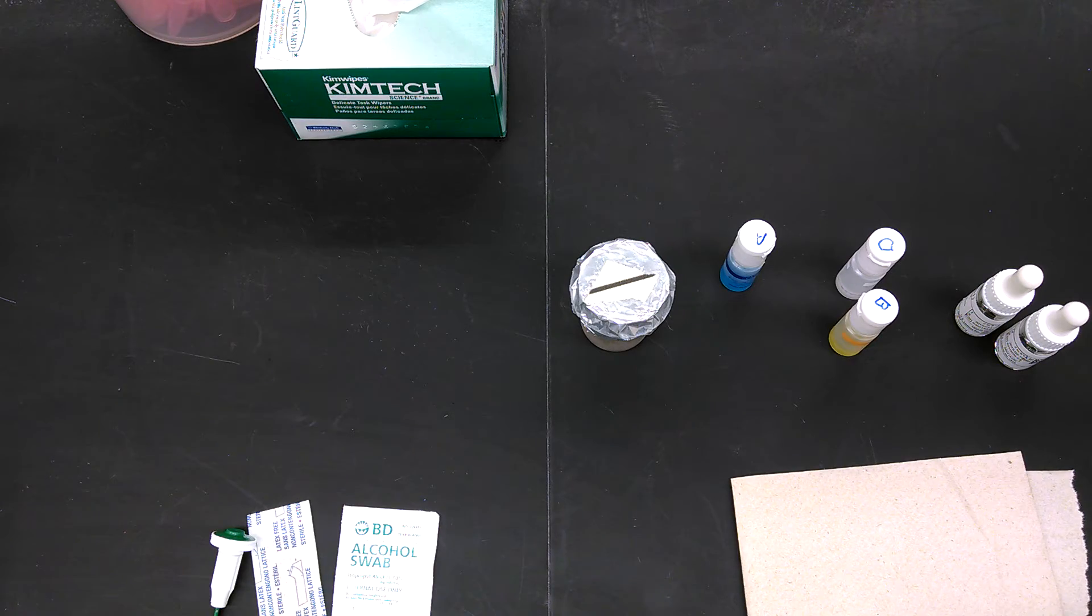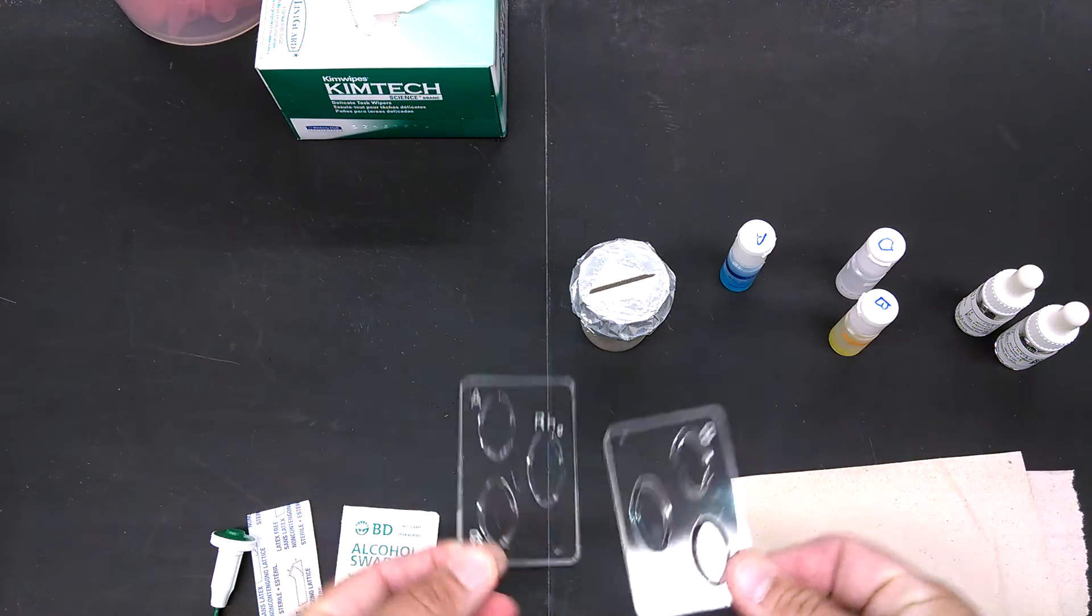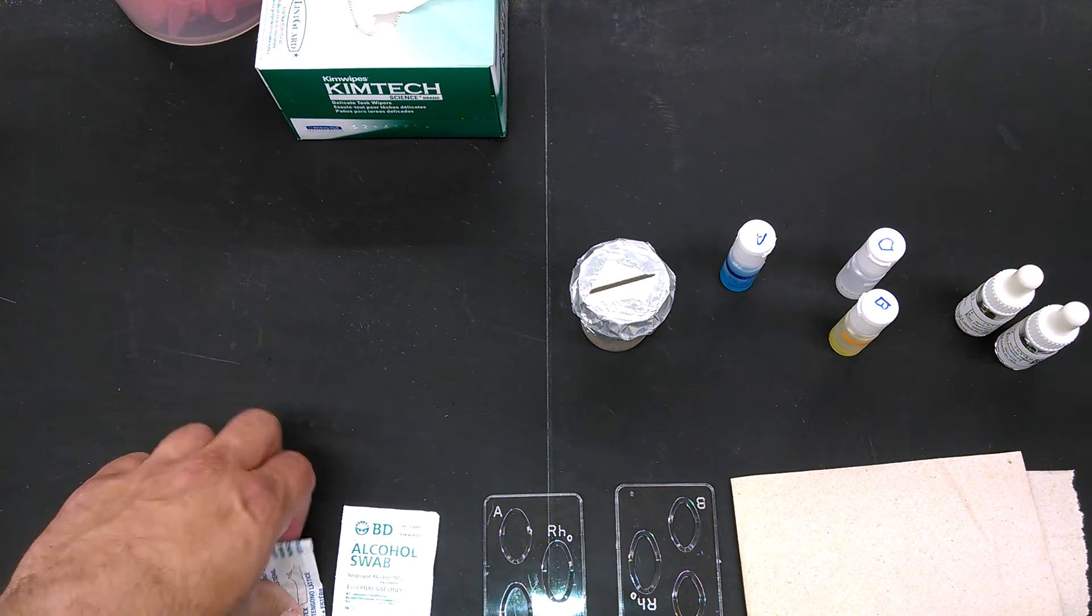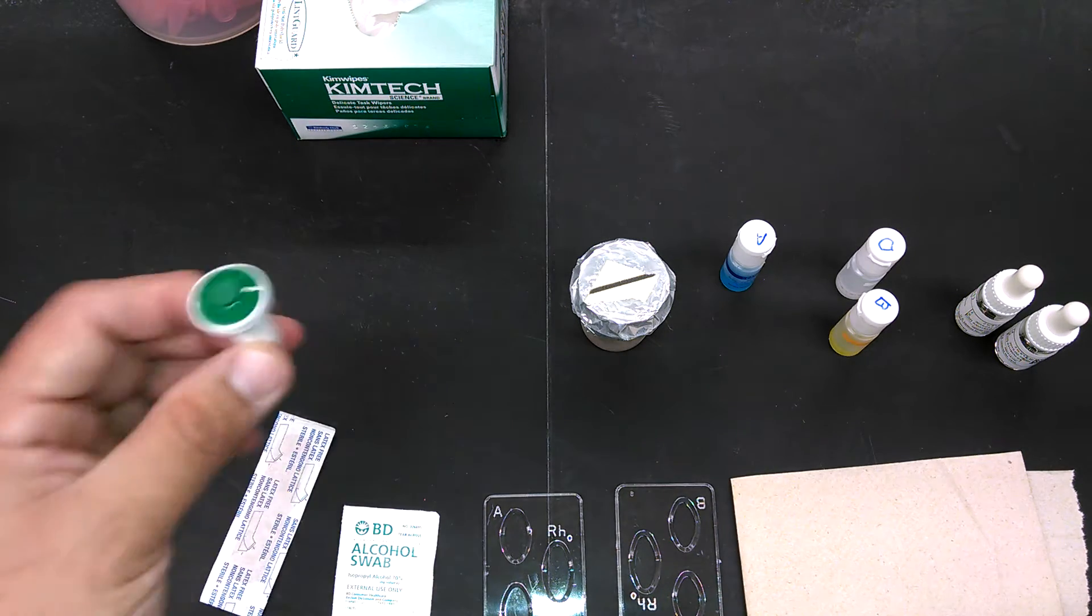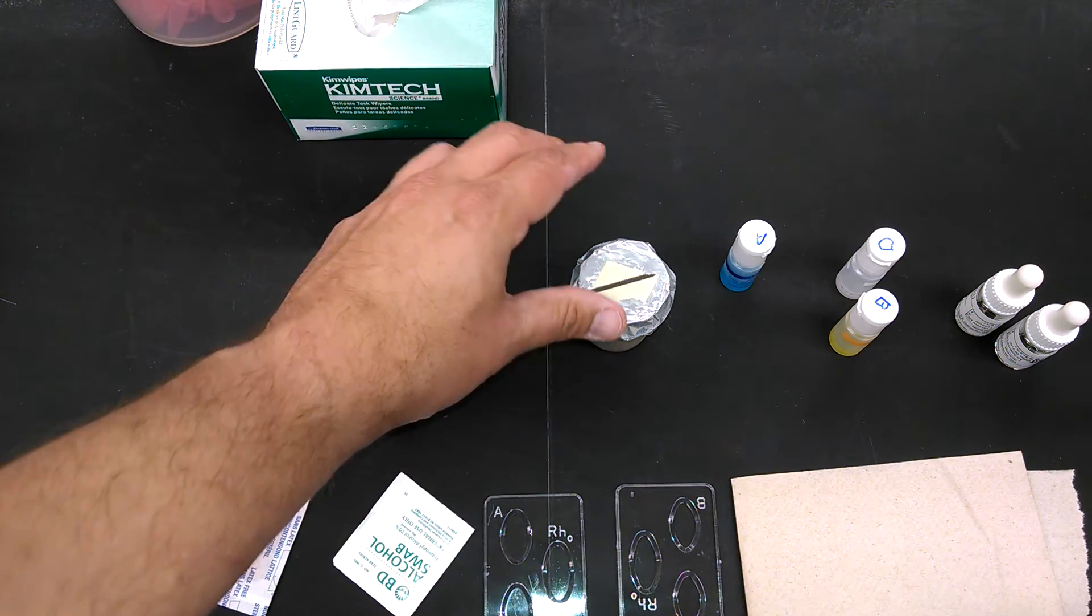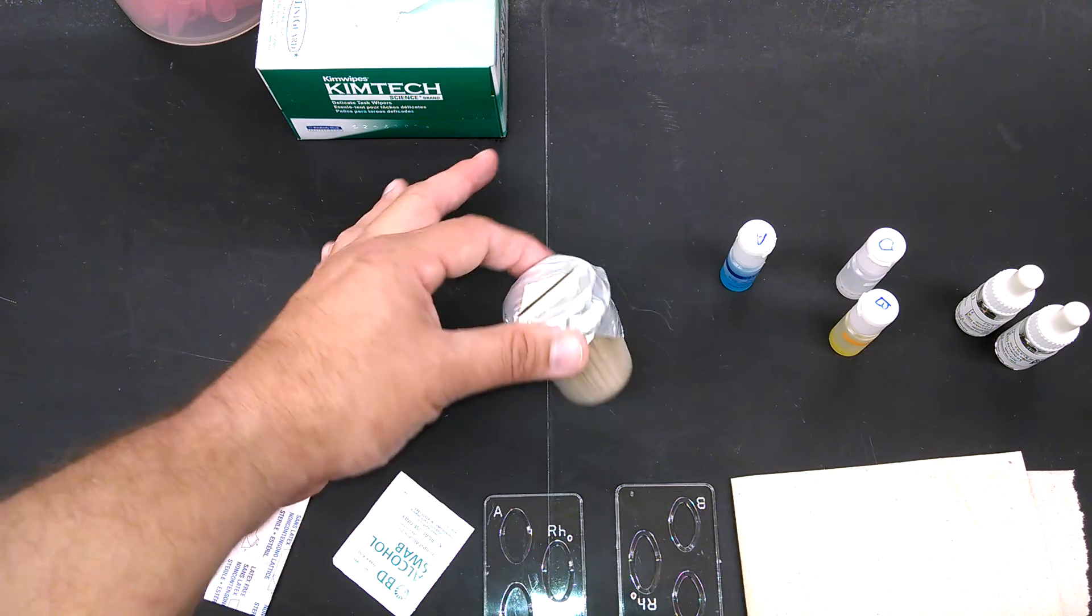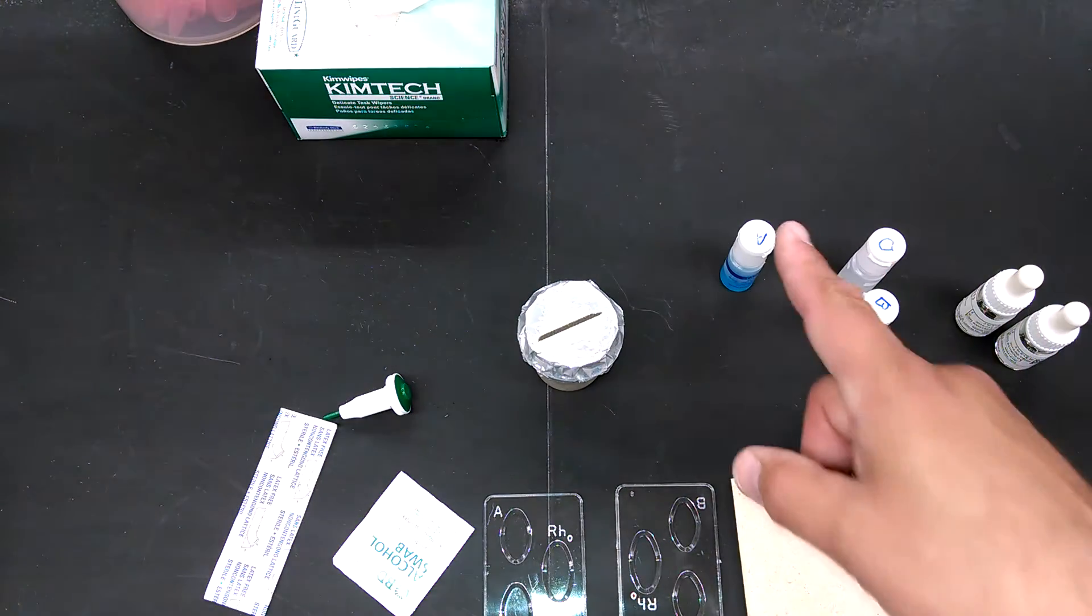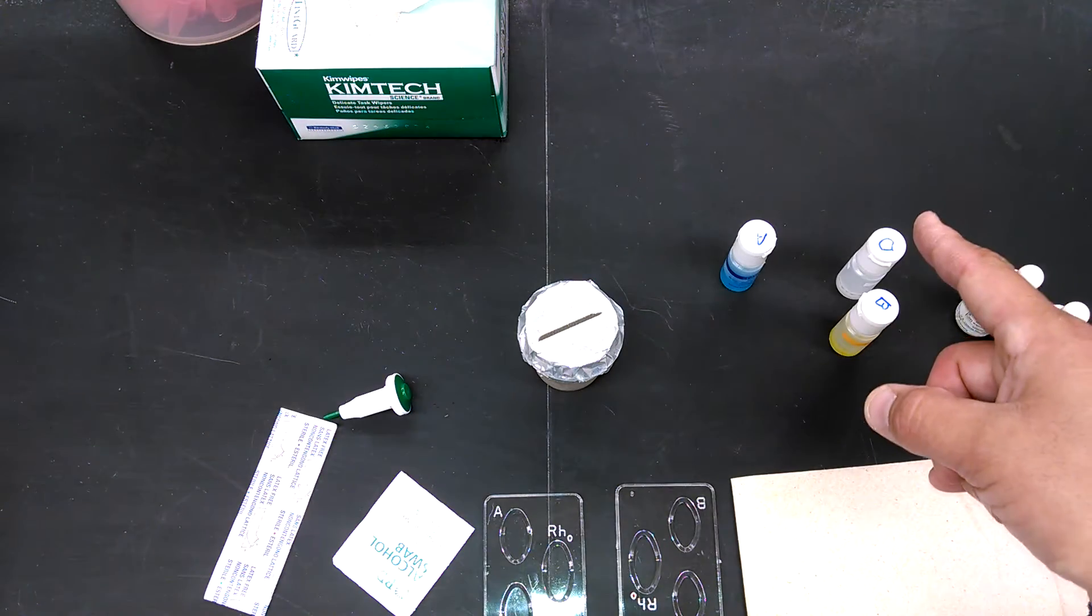You will need two slides, a band-aid, a lancet, an alcohol swab, some toothpicks, and you'll need access to the antibodies A, B, and D.